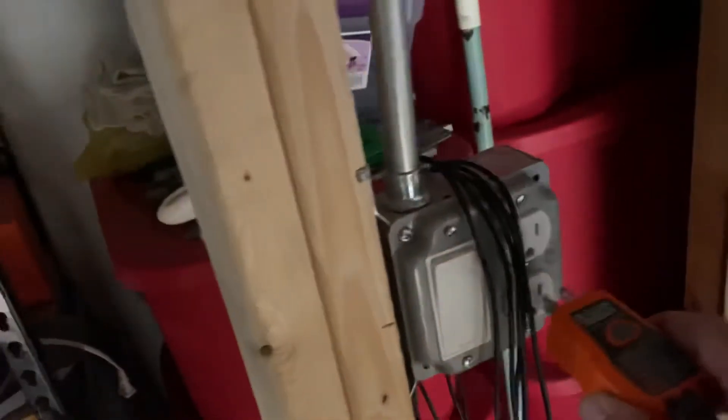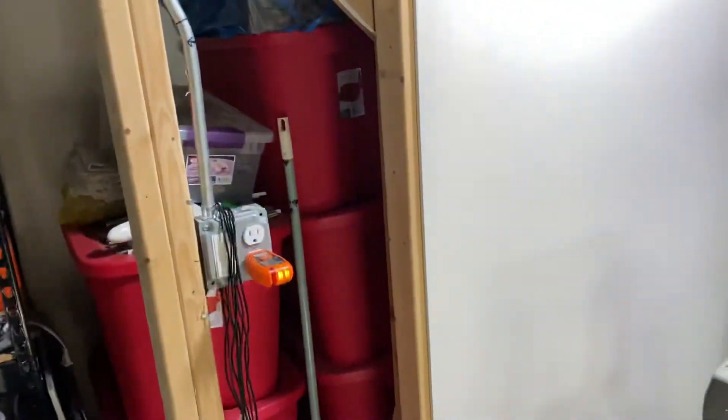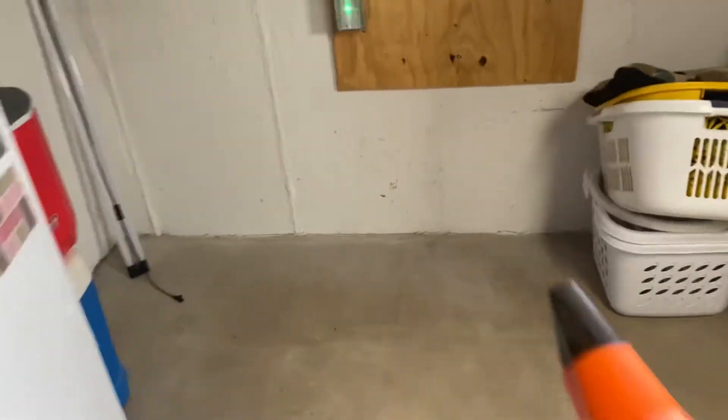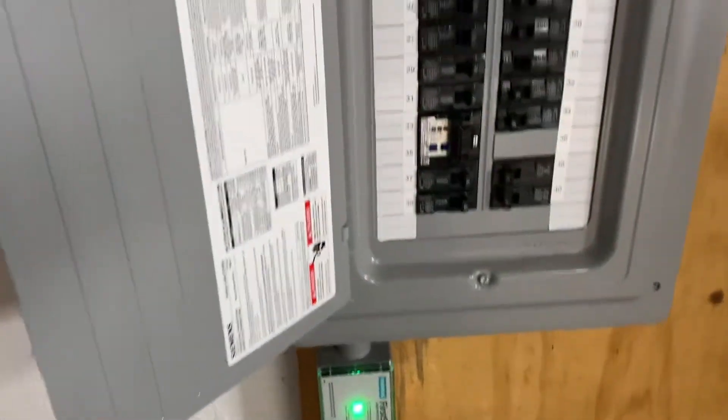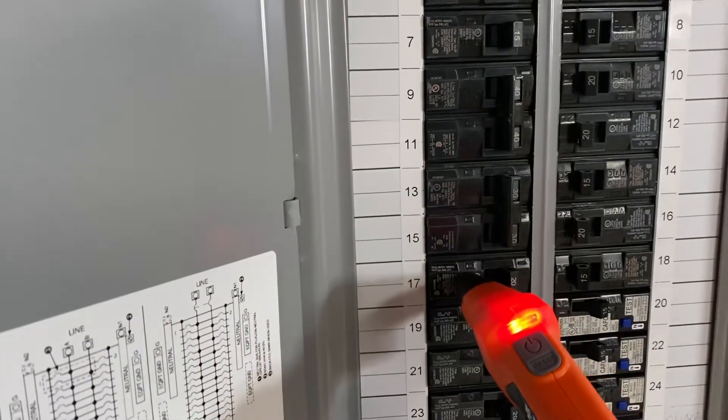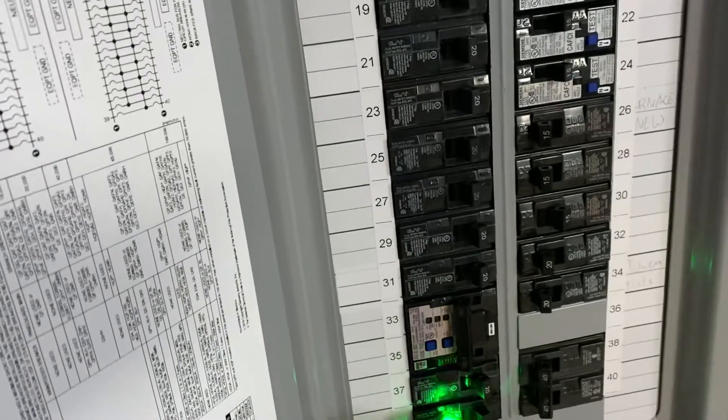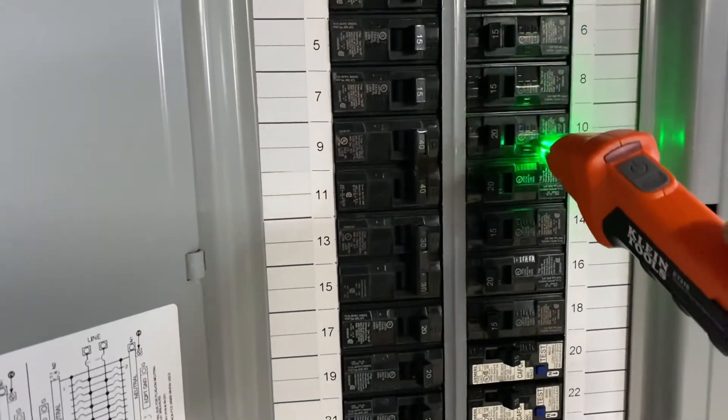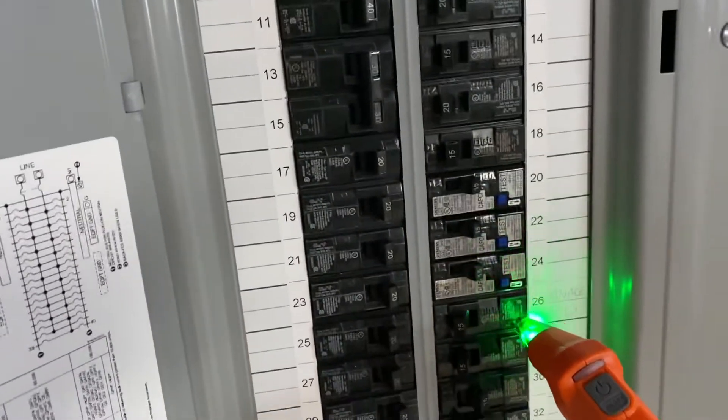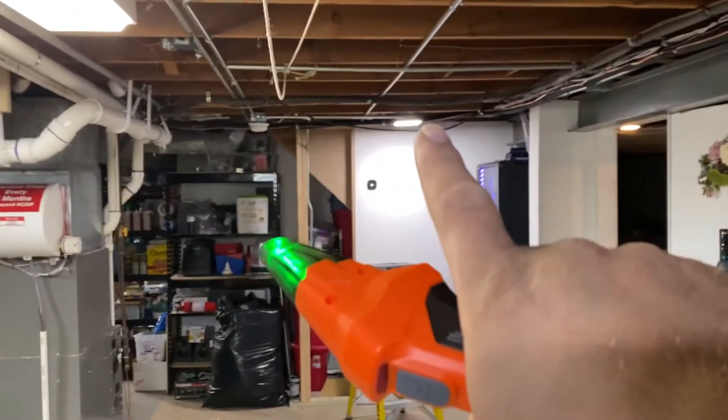Unplug this. This should be a different circuit. Turn the light on and let's try that one. Number 17. I think that should be laundry room and smoke detector. So that light should turn off if I flip number 17.